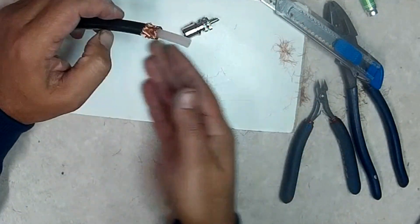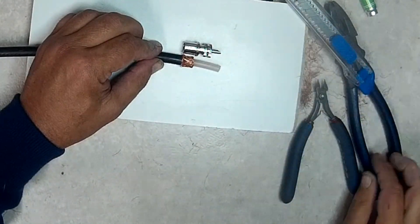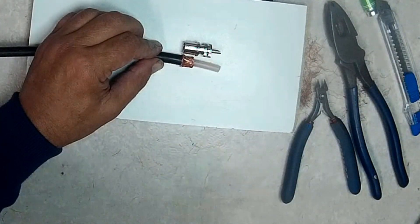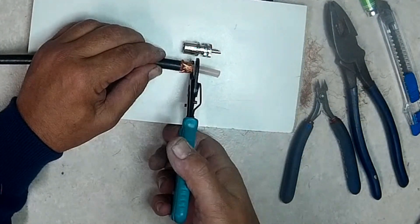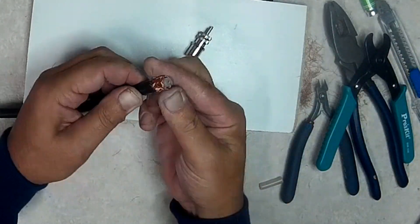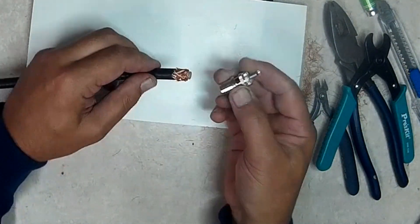An important difference with this end is that the center conductor is not terminated. We are just going to cut it off. Then we can screw on the rest of the plug.